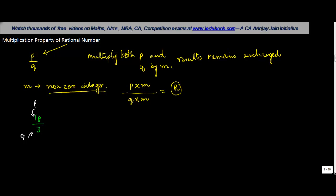Now in such a case, let's multiply them by 7. 7 is a nonzero integer, let's call it m. So what we understood was that if we multiply both p and q by m, the result should remain unchanged.